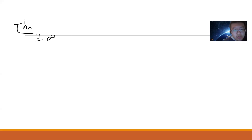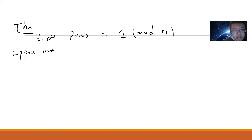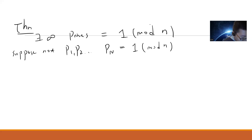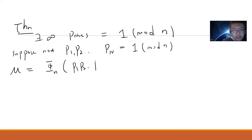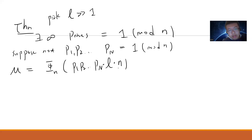Now we are going to prove our result. This proof is tricky. Suppose not — that is, suppose there are only finitely many primes p_1, p_2, ..., p_N all congruent to 1 mod n. Now consider M = φ_n(p_1·p_2···p_N·l·n), where we pick l to be very large such that this value is greater than 1. This is doable because φ_n is essentially a polynomial starting from x, so as x goes to infinity this value grows.